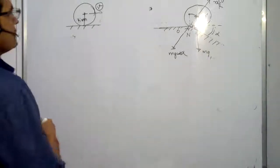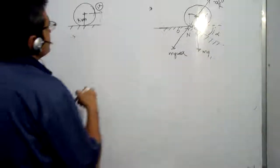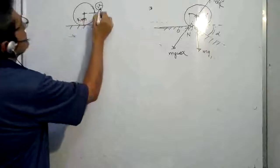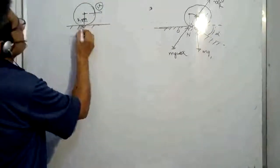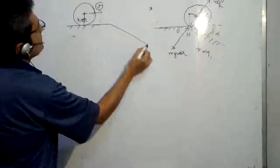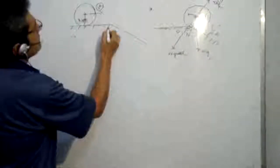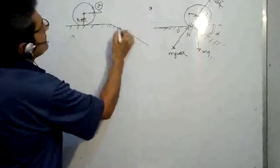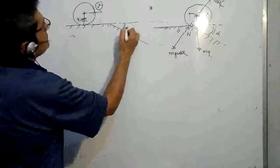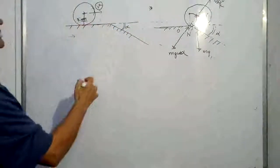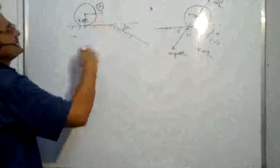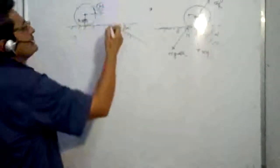We will solve this Irodov problem — an interesting problem where a cylinder is moving at velocity V, mass M, and radius R. It comes across a sharp bend, and the bend makes an angle alpha with the initial plane. We have to find what should be the maximum velocity so that it doesn't fly off when it just rolls over.